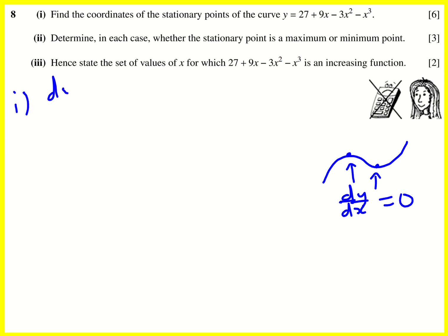Find dy by dx. We can do that using our rule of powers. The 27 is going to disappear. The 9x becomes 9. Here we bring the 2 down, we're going to get 6x. Here I bring the 3 down, I'm going to get 3x squared. And then I'm going to say equals zero for stationary points.